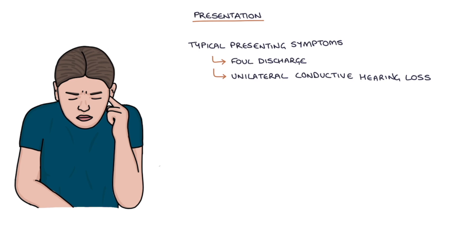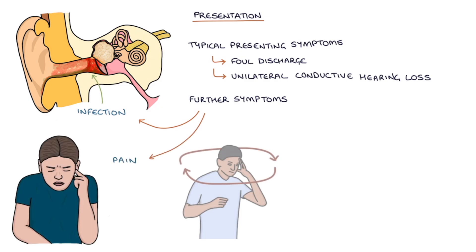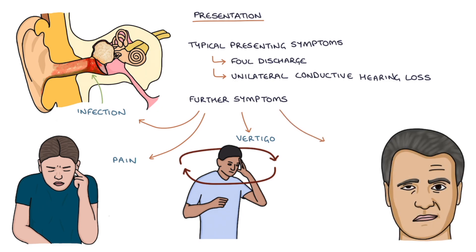As the cholesteatoma continues to expand into the surrounding spaces and tissues, further symptoms may develop, which include infection, pain, vertigo, and facial nerve palsy.